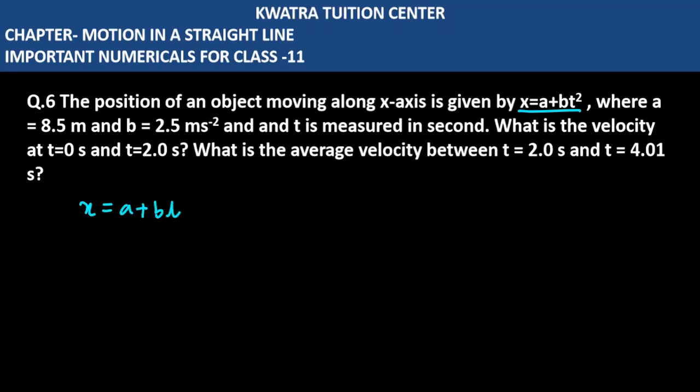Just as we had a question earlier, the same thing, but the difference is that here we have a and b values given. We have to find velocity at t equals 0 and t equals 2 seconds.